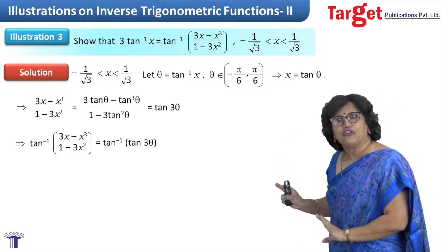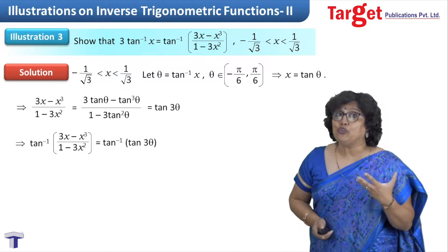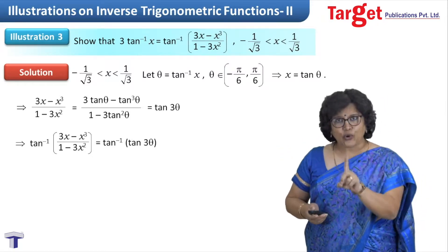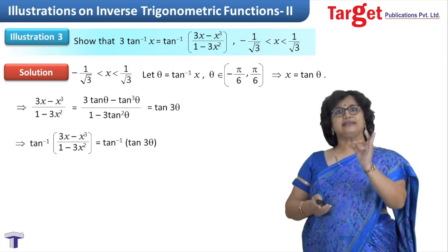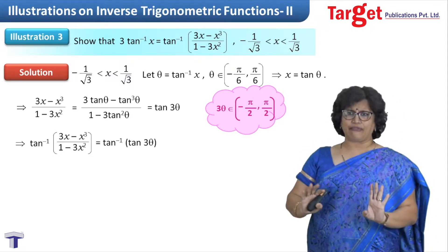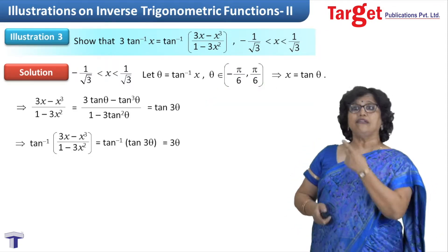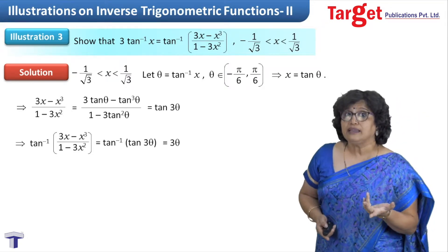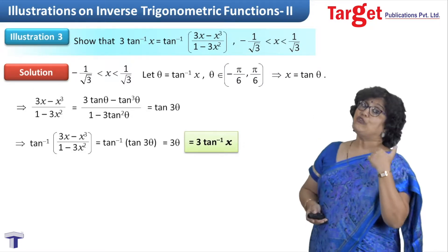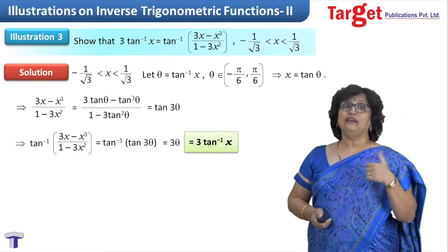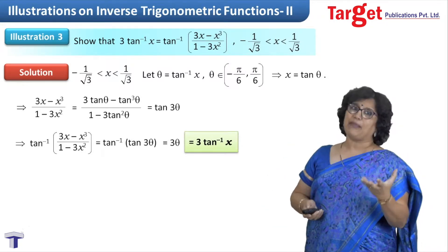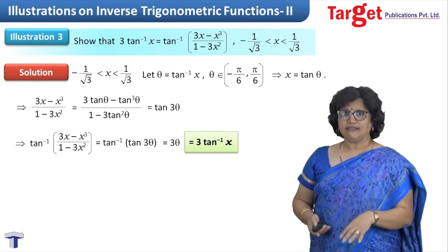That leads to (3tanθ - tan³θ)/(1 - 3tan²θ), which is tan3θ. So tan⁻¹((3x - x³)/(1 - 3x²)) becomes tan⁻¹(tan3θ). Before jumping to the answer 3θ, I must check where 3θ lies. Since θ ∈ (-π/6, π/6), 3θ lies in (-π/2, π/2), which is the range of tan⁻¹. So I can write the answer as 3θ = 3tan⁻¹x, which matches the left hand side. Proven.